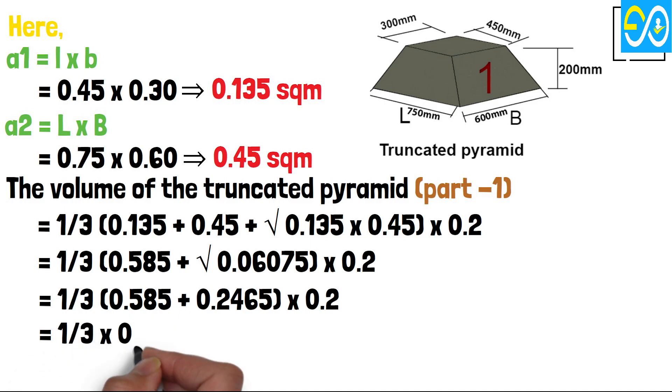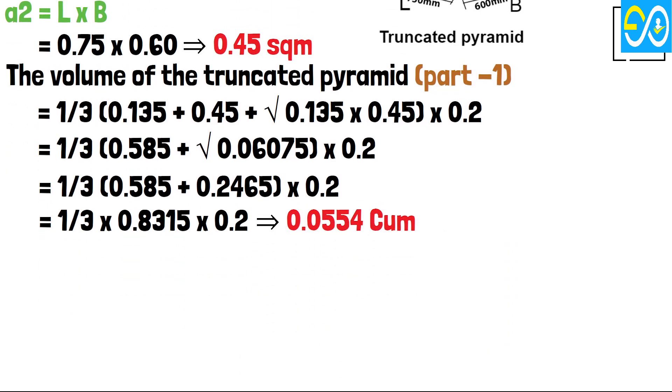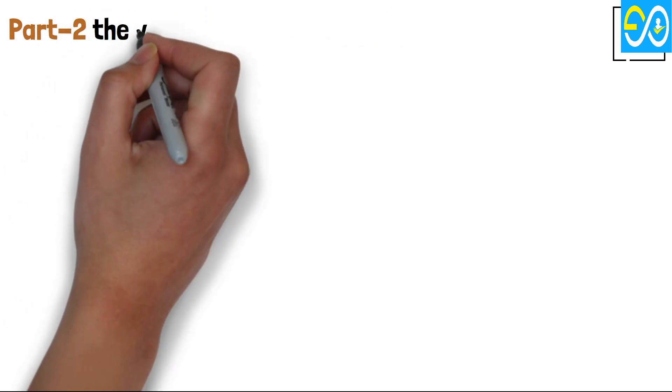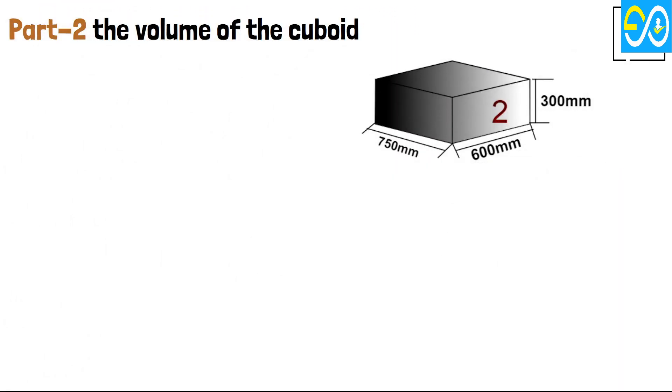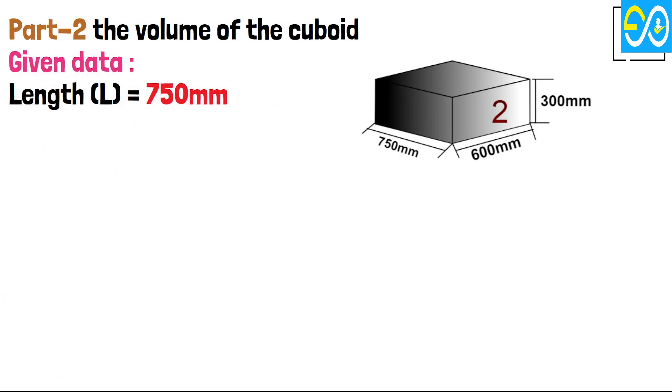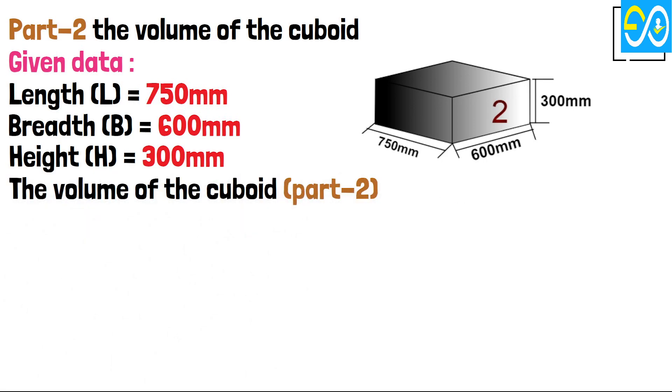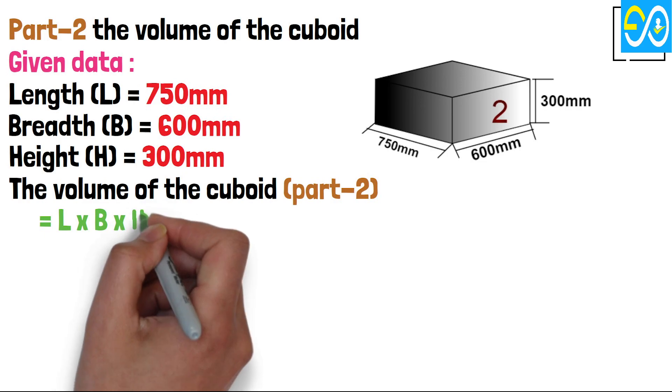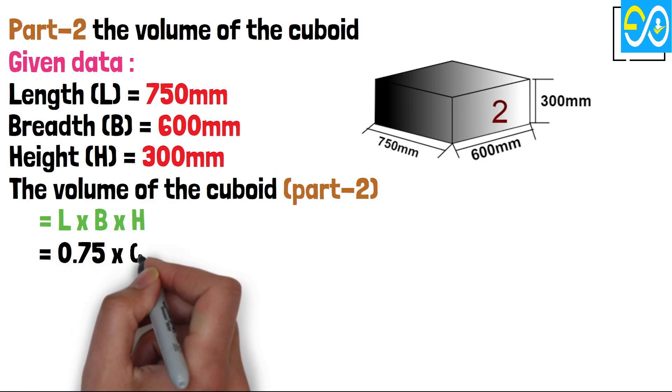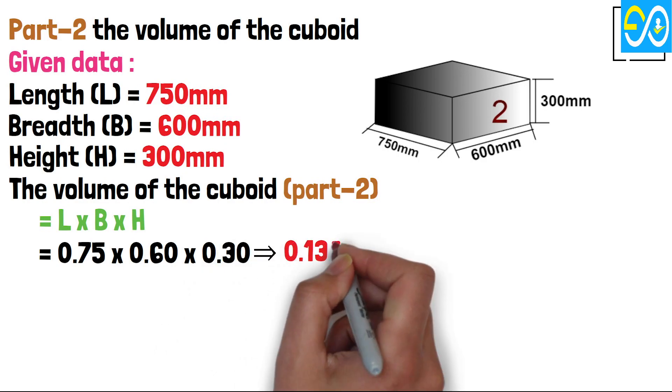Equals 1/3 times 0.8315 times 0.2 equals 0.0554 cubic meters. Part 2: The Volume of the Cuboid. Given data: Length equals 750 millimeters, Breadth equals 600 millimeters, Height equals 300 millimeters. The Volume of the Cuboid Part 2 equals L times B times H equals 0.75 times 0.60 times 0.30 equals 0.135 cubic meters.